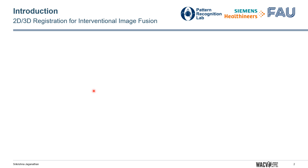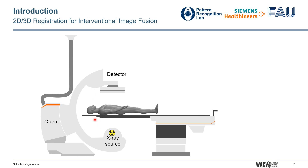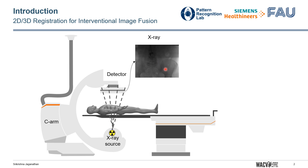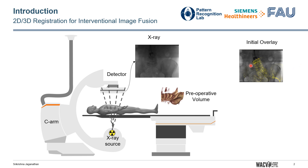For interventional image fusion, you have a C-arm system with the patient lying on the table and you can achieve live X-ray imaging. This provides us live 2D information. To enhance the information available, it is ideal to fuse the preoperative volume with the live 2D imaging. However, a naive fusion will not be accurate since the volume is not spatially aligned with the patient position.